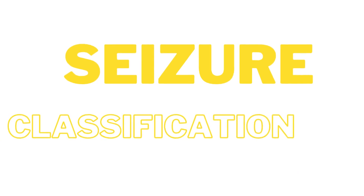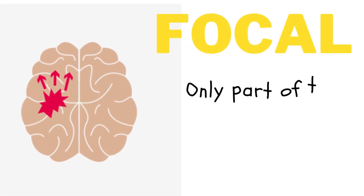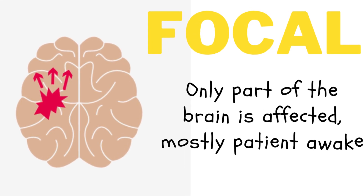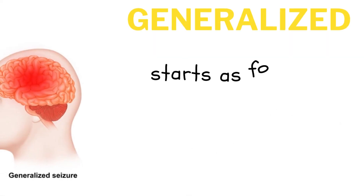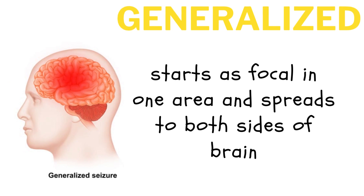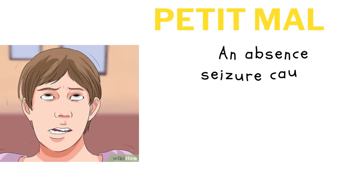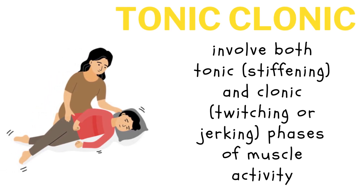The two major classes of seizure are focal and generalized. A focal seizure occurs only in the part of the brain affected; most of the time the patient is awake and aware, which is called a simple partial seizure. If the patient is confused or awareness is affected, it is called a complex partial seizure. In generalized seizure, it starts focally and spreads to both sides of the brain with impaired awareness. The most common types are absence seizure, also called petit mal, and tonic-clonic seizure, also called grand mal.